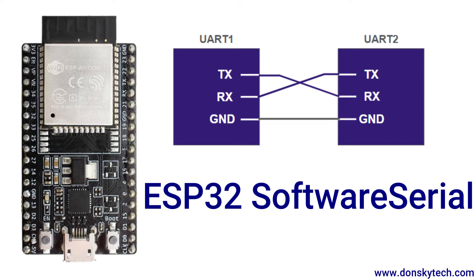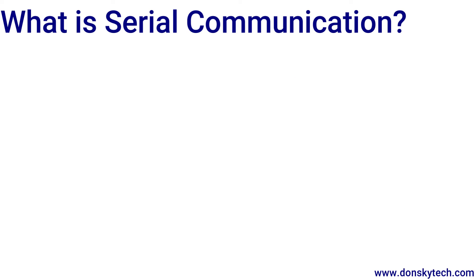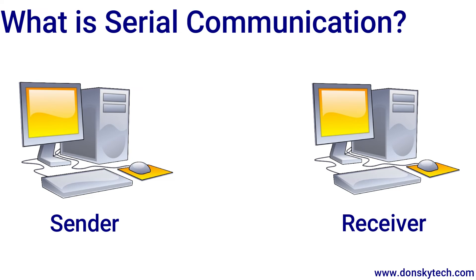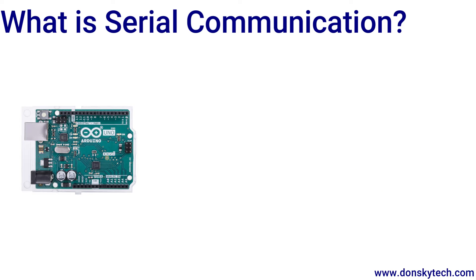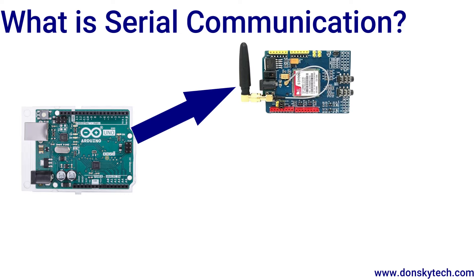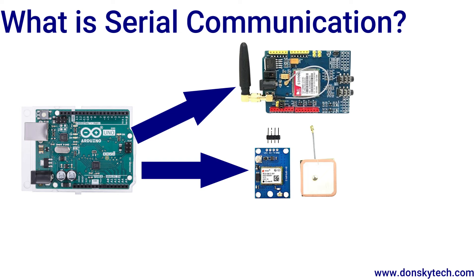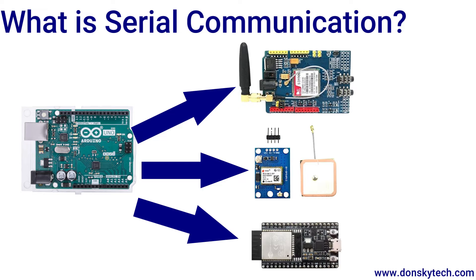But before we discuss ESP32 software serial, let's discuss first what is serial in general and how it applies to an Arduino Uno. Serial communication is the process of sending data one bit at a time between a sender and a receiver. In Arduino programming, we mostly use this protocol to communicate with other devices such as the GSM module, the GPS module, or other microcontrollers.